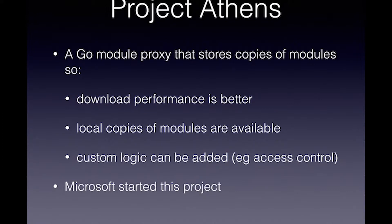Because we're using semantic versioning, the modules you download from the internet are supposed to be immutable, so that they don't change after they've been released. You should be able to cache them locally so you don't have to download them from the internet. That's what the Athens project does. It's not the only module proxy, but it is one that Microsoft built and is gaining traction. It's still in beta but good enough to use either on your local computer or within the company.